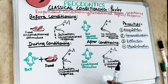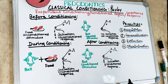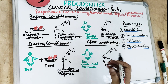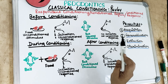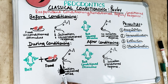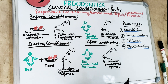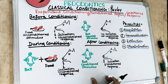Pavlov attached a bell and rang it while serving food to the dog — so before serving the food, there was a bell ringing. Initially there was no response, no salivation while ringing the bell. After a few days, they noticed ringing the bell produced salivation to the same extent as the food. The dog was taught to associate the bell with food and then respond by salivating. Now the bell is a conditioned stimulus.